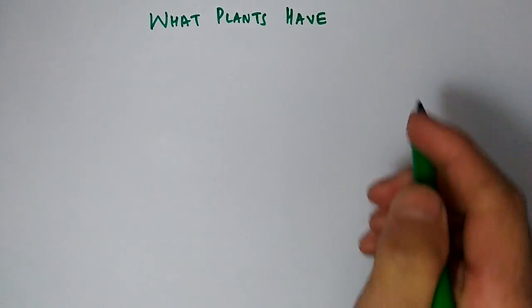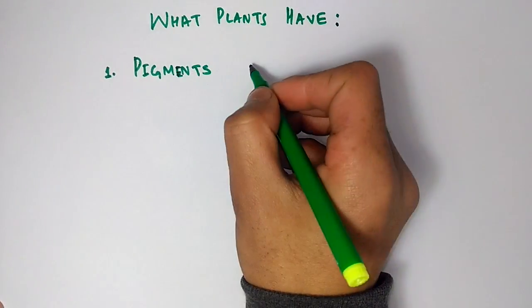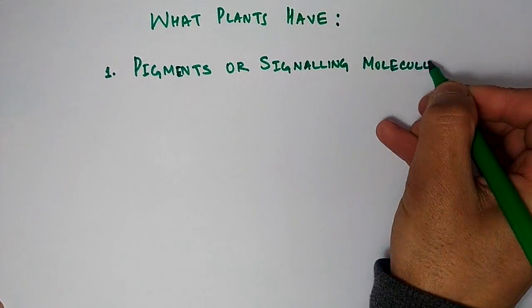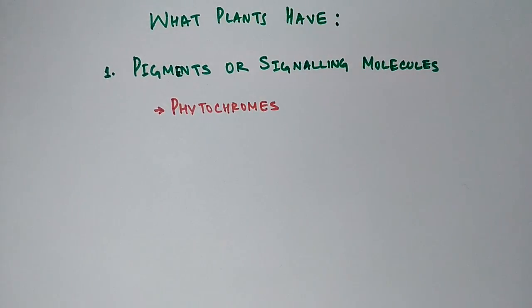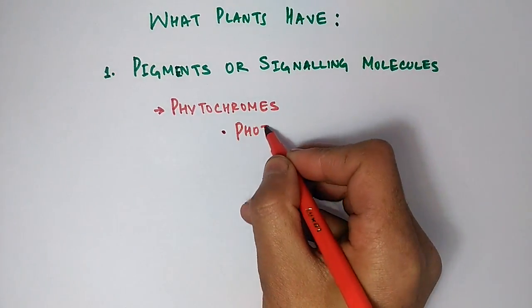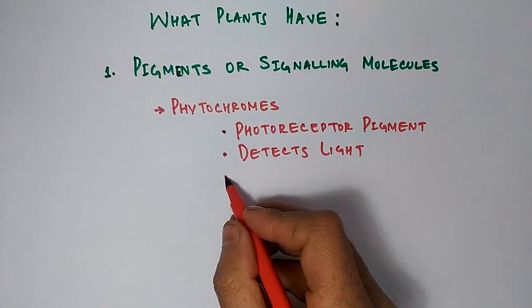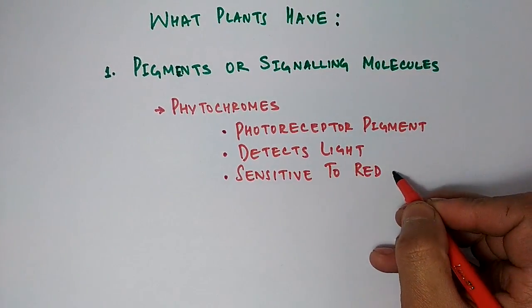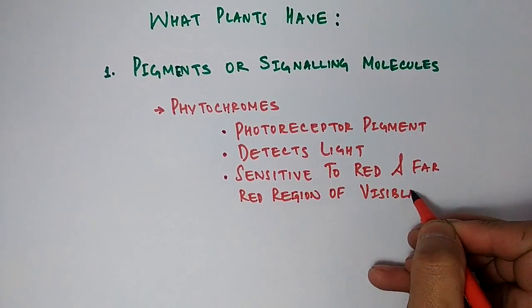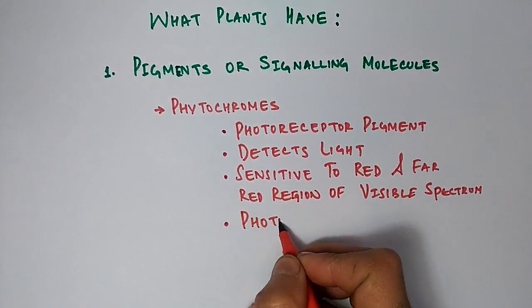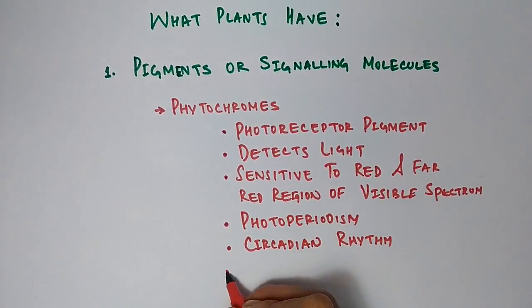Let's see what plants have. We talk about pigments or signaling molecules in plants—these are pigments that are able to transduce a signal. We call them phytochromes. They are photoreceptor pigments in plants. They have the ability to detect light, sensitive to red and far-red region of visible spectrum. They set the photoperiodism in plants, they set the circadian rhythms, and they also help in germination of seeds—that's photoblasty.